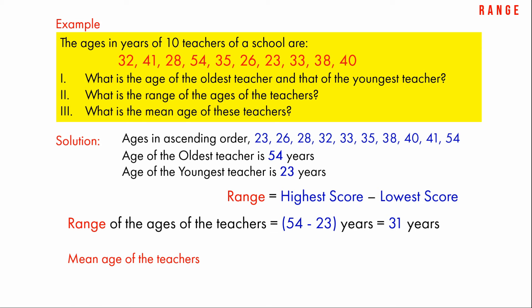After solving we get 23 + 26 + 28 + 32 + 33 + 35 + 38 + 40 + 41 + 54, divided by 10, which gives 35 years.